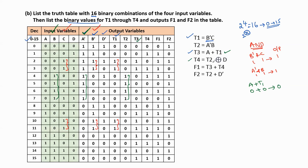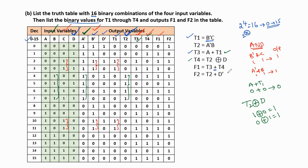For t4 = t2 XOR d: XOR gate output is 1 when only a single input is 1. So 1 XOR 0 gives 1, and 0 XOR 1 also gives 1. For f1 = t3 + t4, focus on t3 and t4 columns. For f2 = t2 + d', apply the OR operation on t2 and d'.